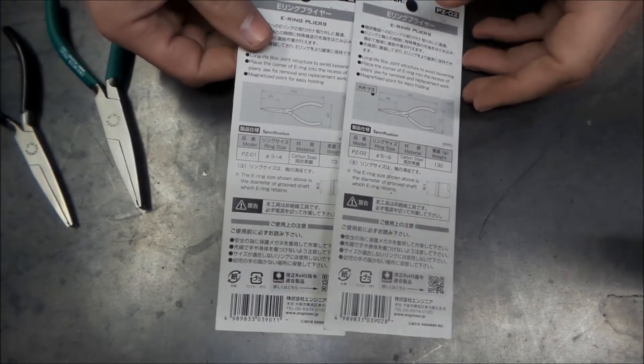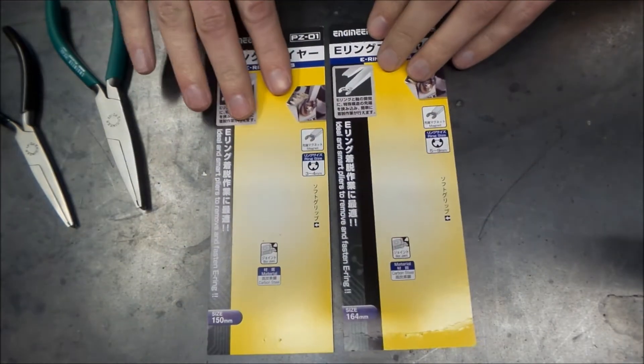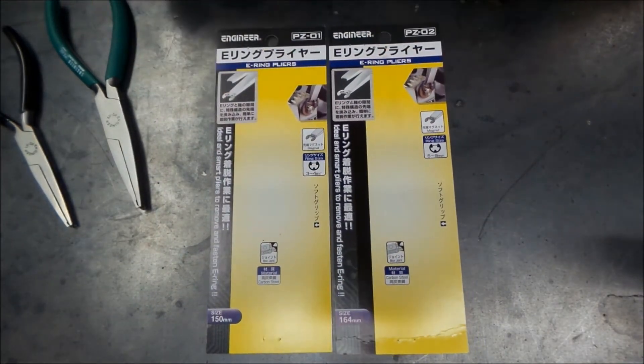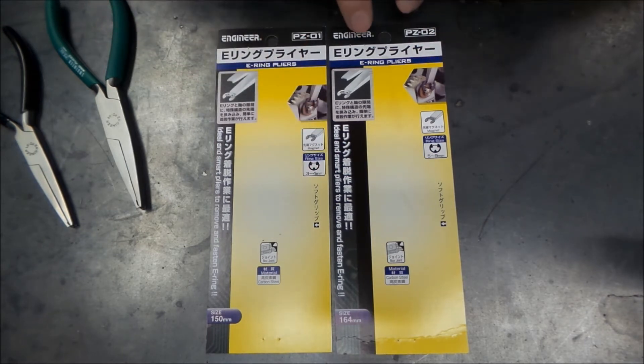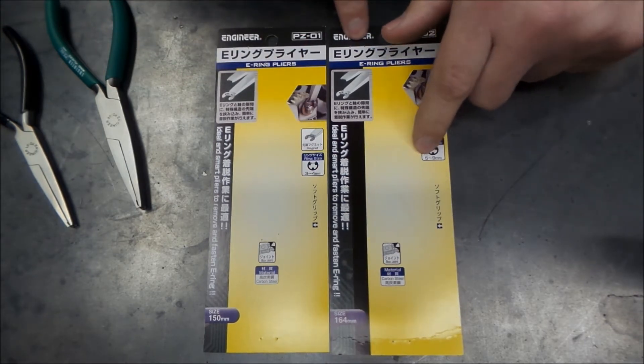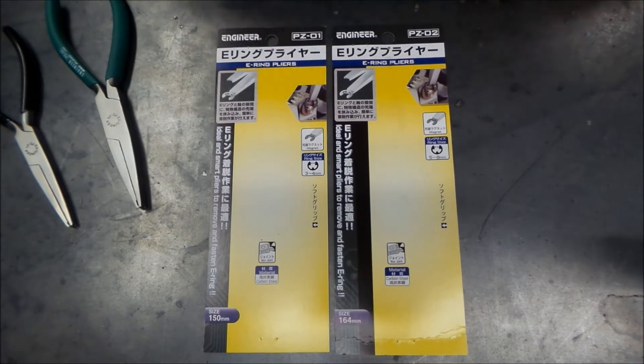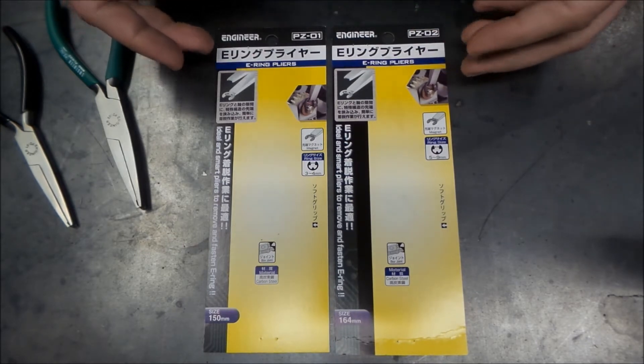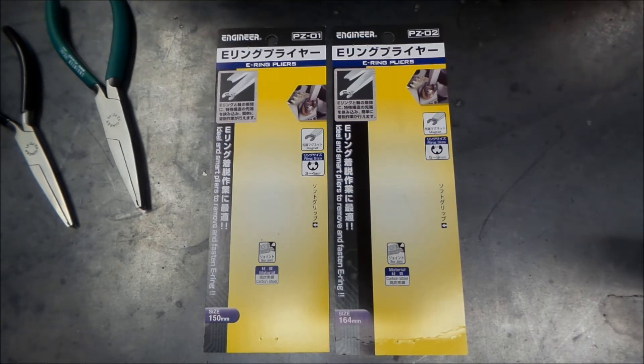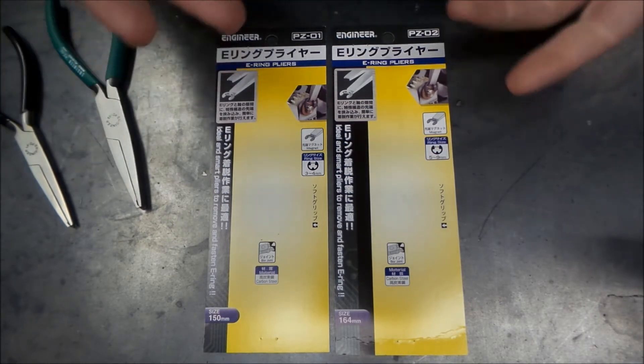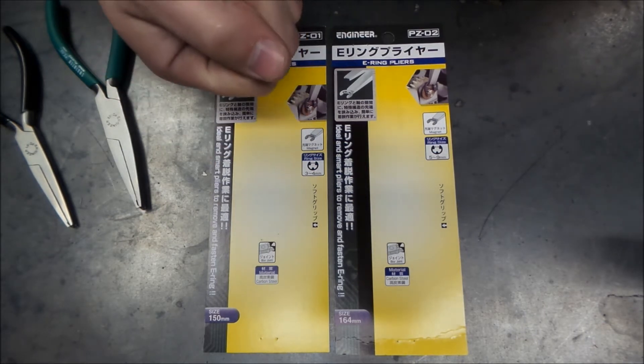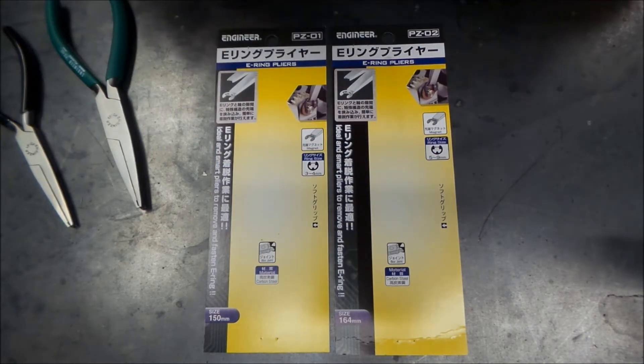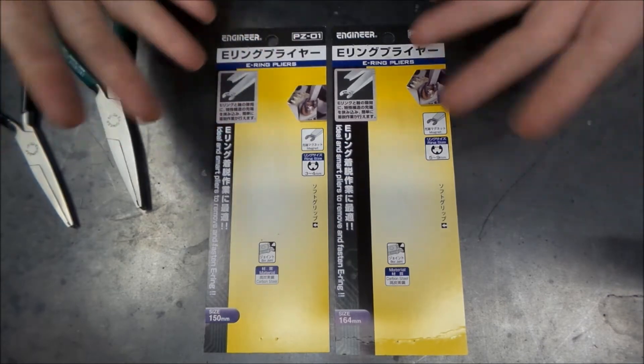The PZ-01 says it's for the 3 to 4 millimeter and then the PZ-02 is 5 to 9 millimeter. So that should give us a decent assortment of E-rings that these will work with. That's pretty cool because E-rings can be a little pain in the butt to try and work with - to get them off and put them back on. I thought I had some around here but didn't find them.